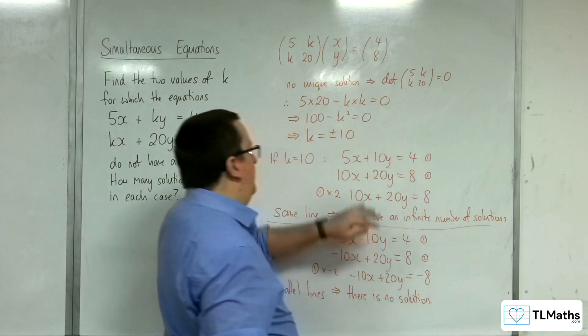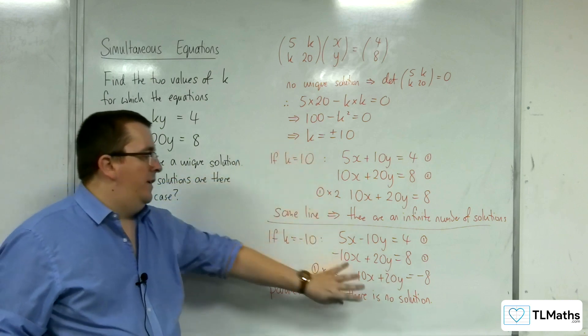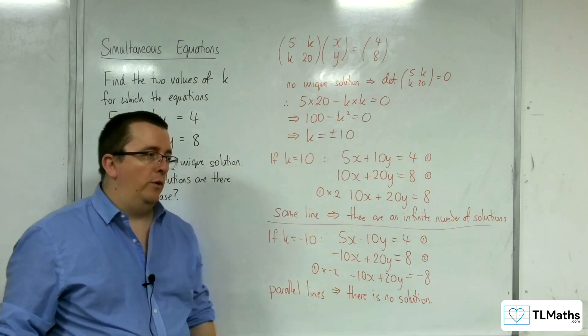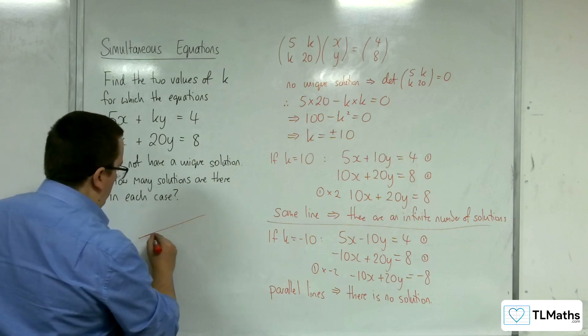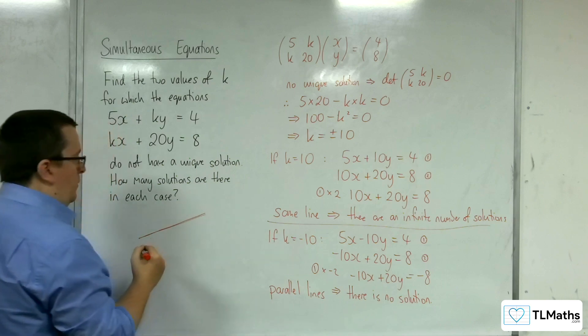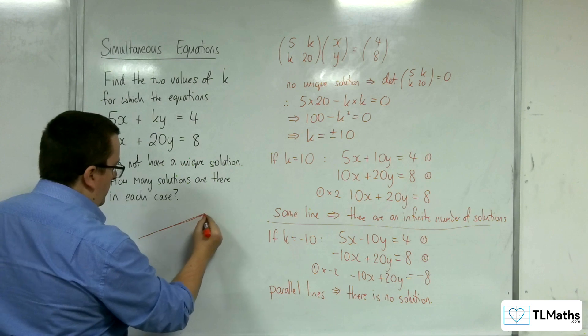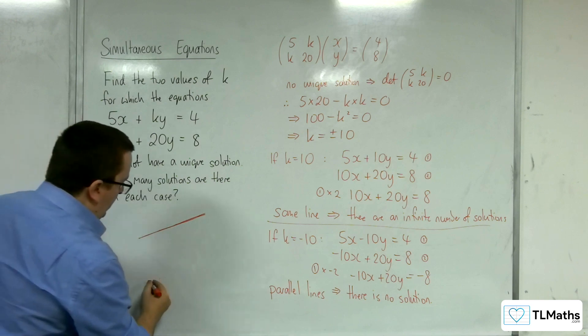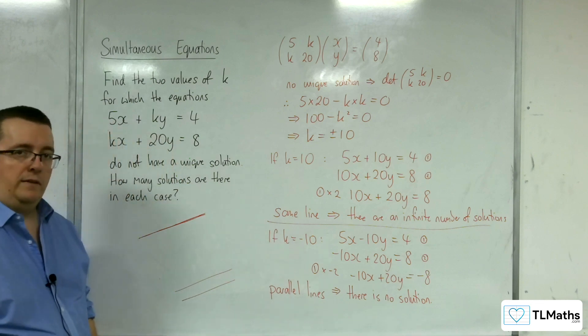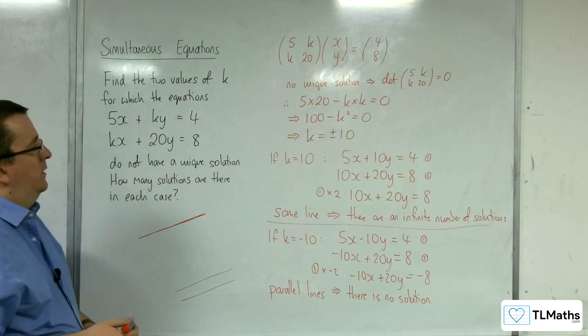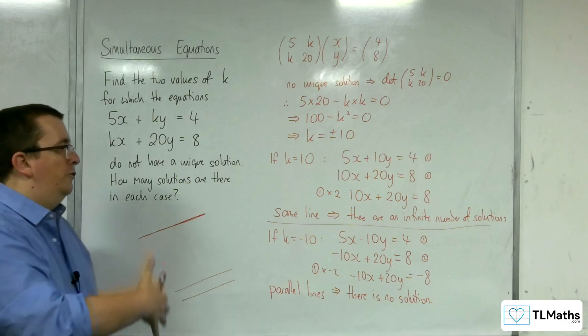So in this situation, we had an infinite number of solutions. In this situation, we've got no solution whatsoever. So in the first example, you've got the line and the second line overlapping one another. In the second situation, you've got the two lines being parallel and never meeting. So that is how we can solve this problem.